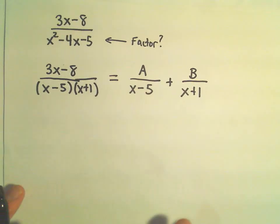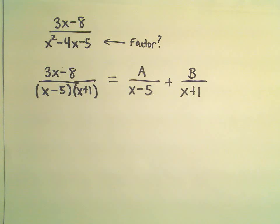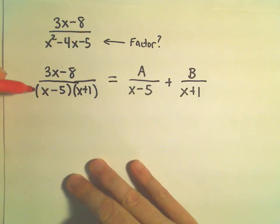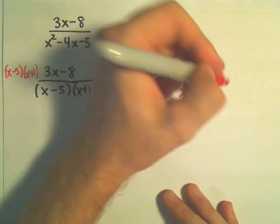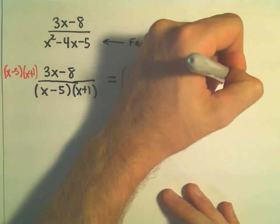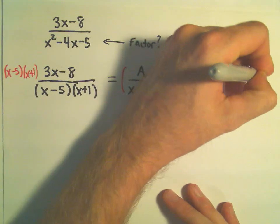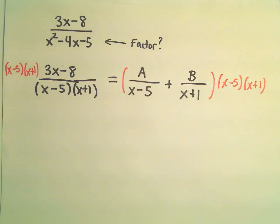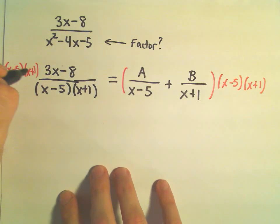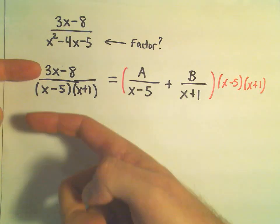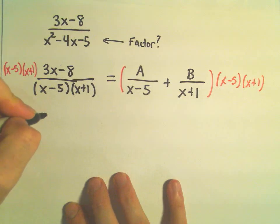A few different ways to do these. The way that I like to do it is whatever is on the denominator of my original rational function, I basically just multiply both sides of my equation by that. So all I'm doing is I'm going to get rid of the fractions. That's the basic idea. So if I multiply both sides by x minus 5 times x plus 1, on the left side, those would cancel out. We would just be left with the 3x minus 8.